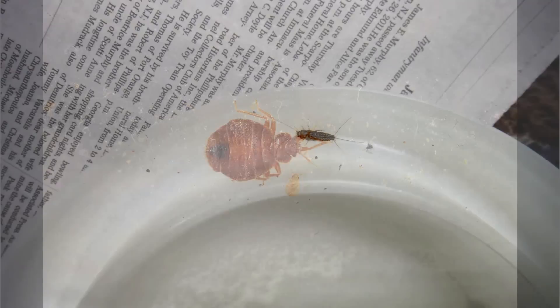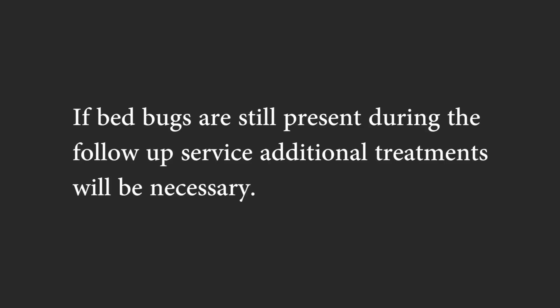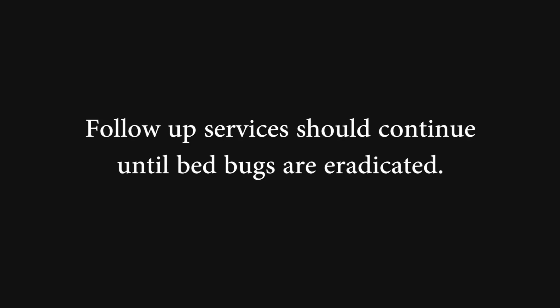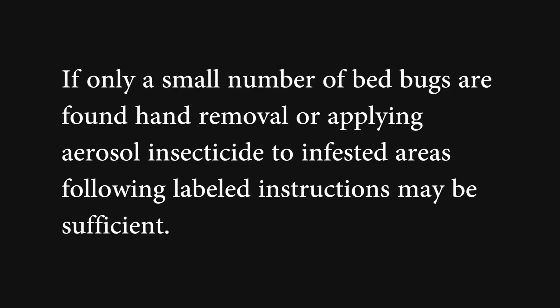Check the previously set insect interceptor traps and record the number and distribution of bed bugs in different rooms. First and second instar bed bugs are very difficult to see once they die in the monitor traps, as they are very small. In addition, other insects can also appear in the monitors. For this reason, using a handheld magnifying glass will help in correctly identifying if bed bugs are present. If bed bugs are still present during the follow-up service, additional treatments will be necessary. Follow-up services should continue every two weeks until the bed bugs have been eradicated. Rotating among different insecticide classes in the follow-up services is recommended. If only a few bed bugs are found, hand removal or applying an aerosol to infested areas following label instructions may be sufficient.